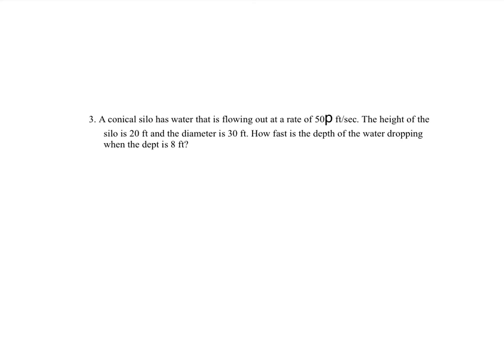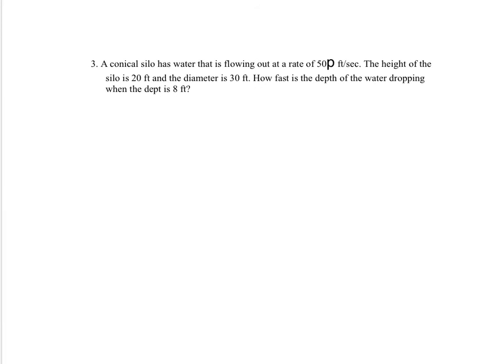Let's move on to the third problem — a conical silo. A conical silo has water flowing out at a rate of 50 pi cubic feet per second. Since water is flowing out, dV/dt is negative 50 pi cubic feet per second. The height of the silo is 20 feet and the diameter is 30 feet. How fast is the depth of the water dropping when the depth is 8 feet?